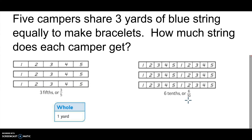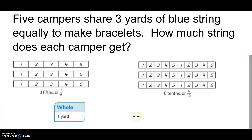Are we talking about the same whole? Yes, our whole is one yard of the blue string. Are three fifths and six tenths equivalent fractions? Yes. The sizes of the parts of string are different, but the campers are still sharing three yards of string equally. So three fifths and six tenths name the same amount. Today we've been exploring equivalencies by doing equal sharing in different ways. Tomorrow when you come to class, be ready to solve some problems like this.